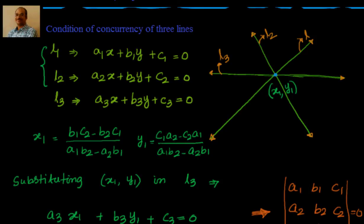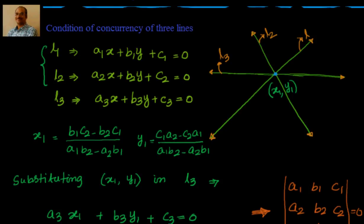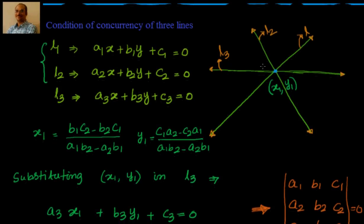Now let's take a simple example and look at it both using the determinant method and by finding the point of intersection of two lines and substituting it into the third line to see that the third line satisfies the point. If it satisfies, all three lines are concurrent.